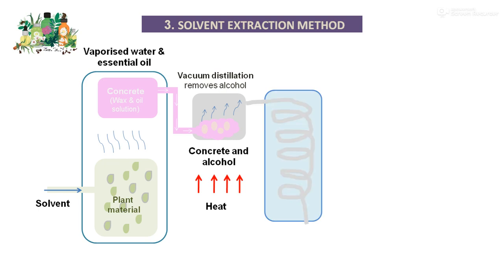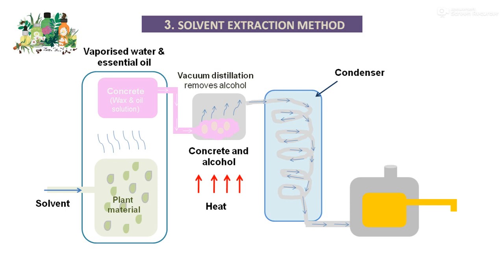The pure absolute is passed through the condenser, where the vapors get cooled as cold water is passed through. In the collector, we obtain only one part — the pure essential oil in the form of the absolute. This is a more advantageous method over water extraction or steam extraction. We can also extract the fat in plant material through the solvent extraction method.